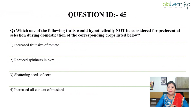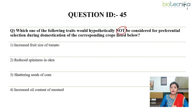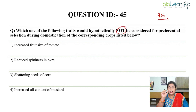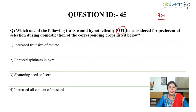Moving on to question number 45, which is from Unit 9, subunit E — organisms of health and agriculture importance, specifically the topic of domestic animals and crops. The question asks: which one of the following traits would hypothetically not be considered for preferential selection during domestication of the corresponding crops? The options are: increased fruit size of tomato, reduced spininess in okra, shattering seeds of corn, and increased oil content of mustard. The answer is option three.